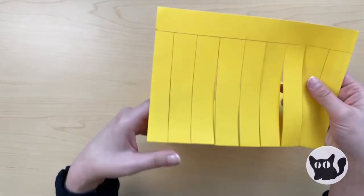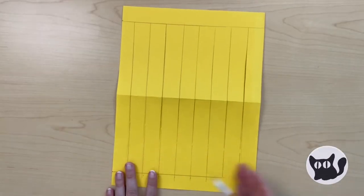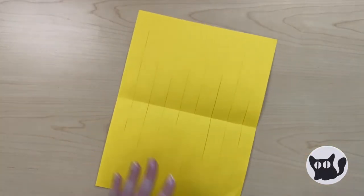Now unfold your paper. Your loom is complete. If you want, you can carefully erase the marks you made, or you can turn your loom over and hide the marks.